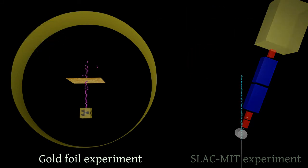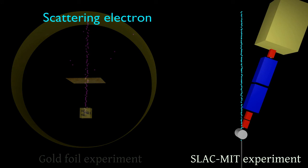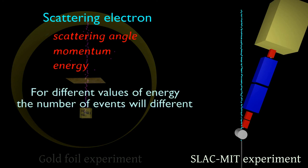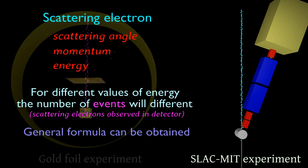In the gold foil experiment, the number of alpha particles at some scattering angle were detected. The SLAC-MIT experiment can measure the scattering angle, momentum, and energy of the scattering particle. This gives much more information which can be used for the analysis of the scattering process. It is not hard to compute the general formula for the number of particles which will scatter into some angle and have some energy.